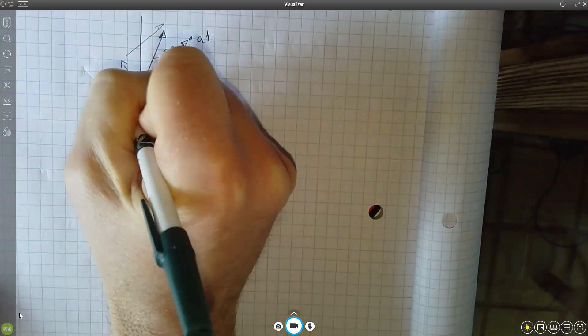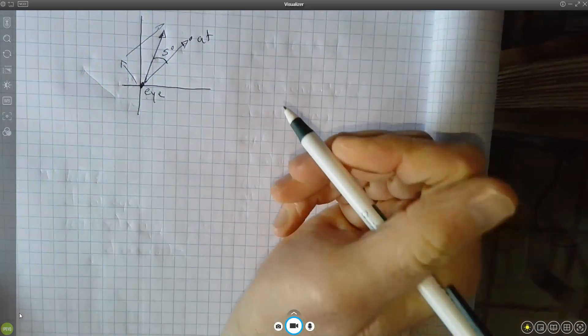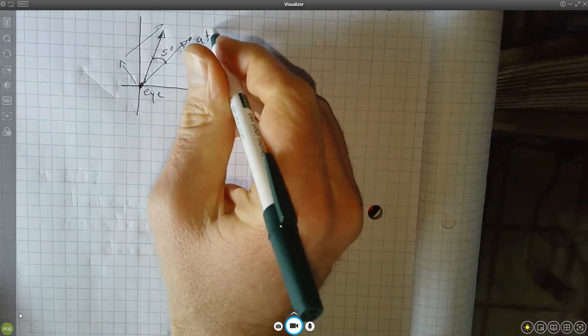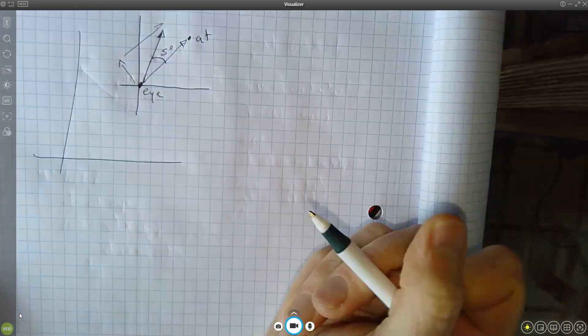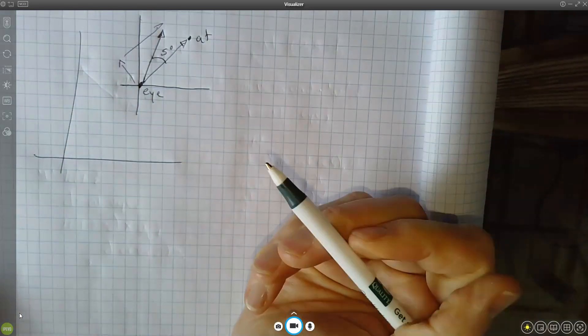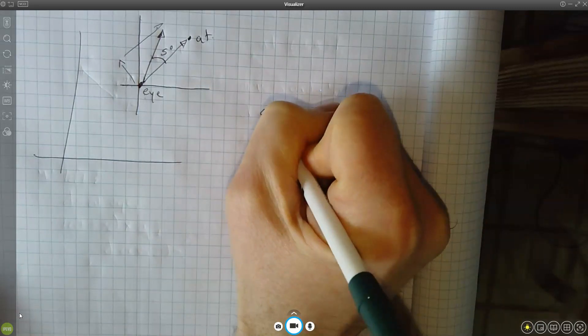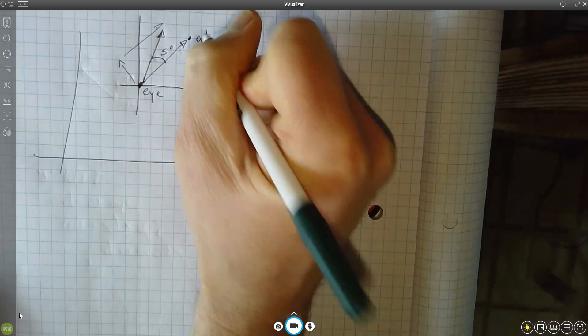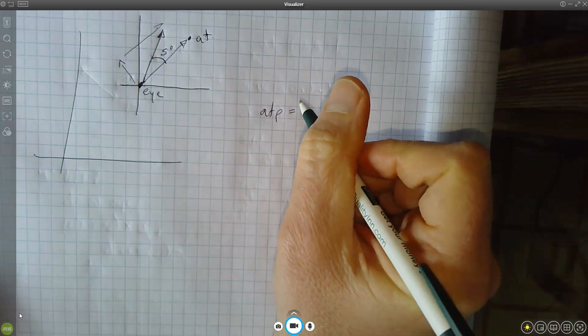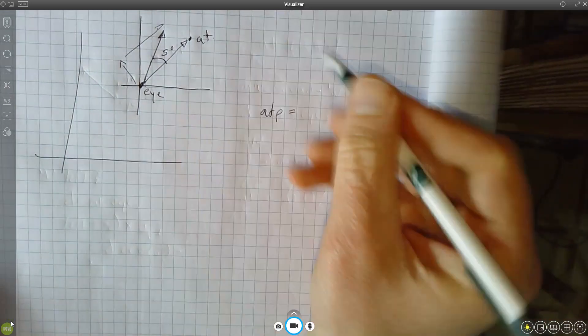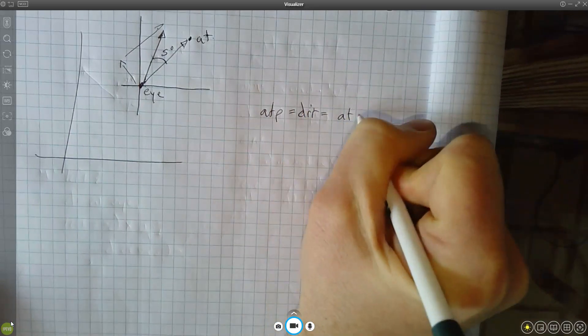So let's establish a coordinate system. Let's put our I at the beginning of this coordinate system. So I'm going to calculate, instead of the real at point, because the real global coordinate system is down in some other position, I'm trying to establish a new coordinate system. So I'm going to make a new point called at P, which is going to be the at point in the I coordinate system. This is just going to be the same as the direction vector that we calculated before. This is the same as F minus I.